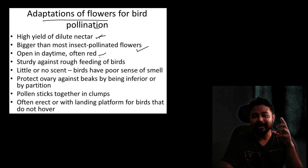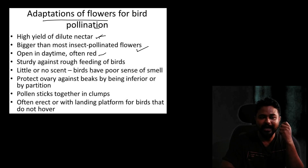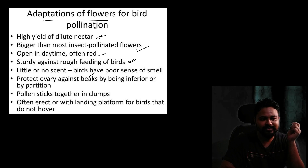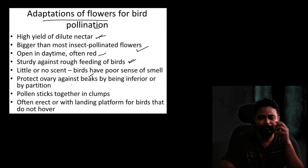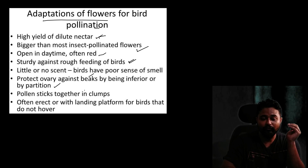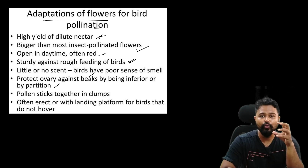Mostly bird-pollinated flowers have strong flower structures. They have little or no scent because birds have a poor sense of smell. The ovary is protected against the beaks of birds by being inferior or by having partitions.